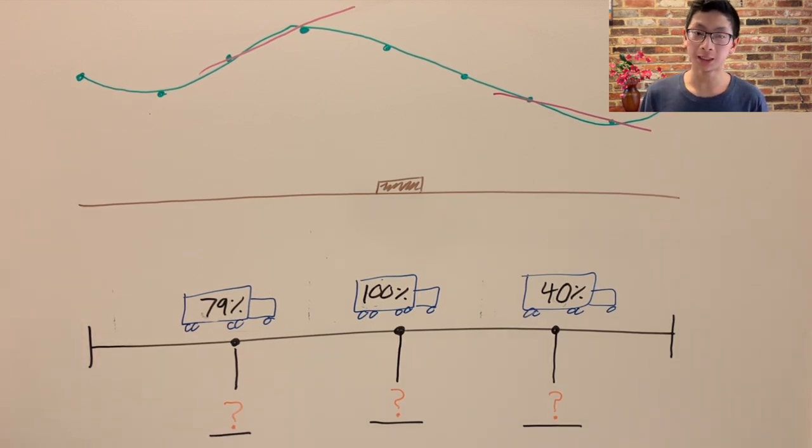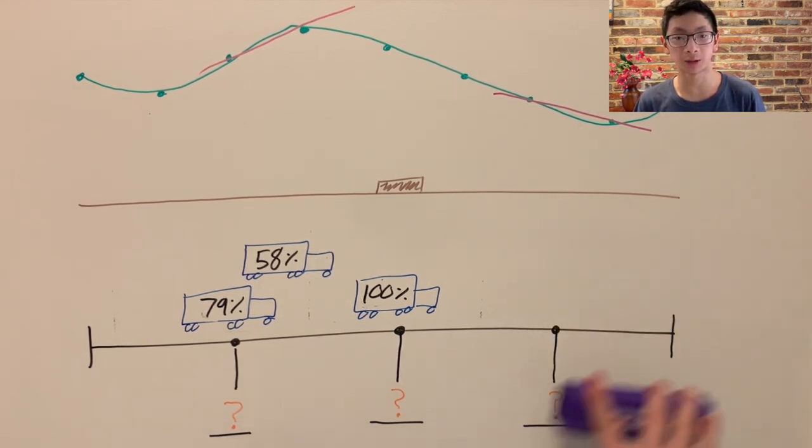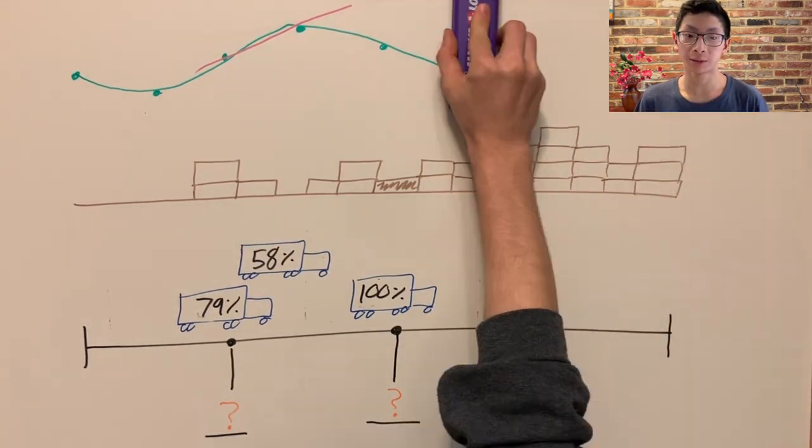Whenever the derivative of the AADTT function was positive along that mile, that meant trucks were entering, so we added the appropriate number of trucks to the list, with batteries uniformly distributed from 12.5% to 100%. Whenever the derivative was negative, trucks were leaving, so we removed a random selection of trucks from our list. Once the simulation reached the last mile of the corridor, we were left with our need function.